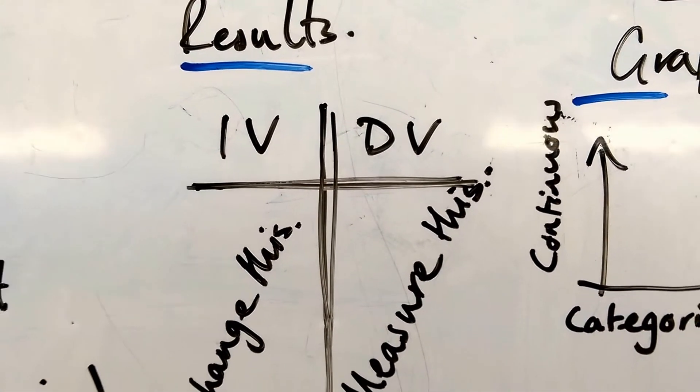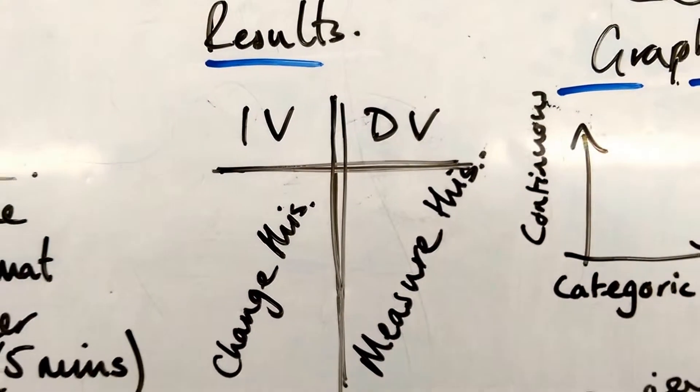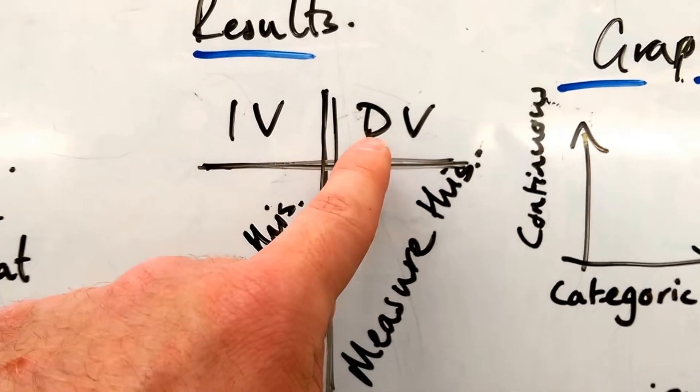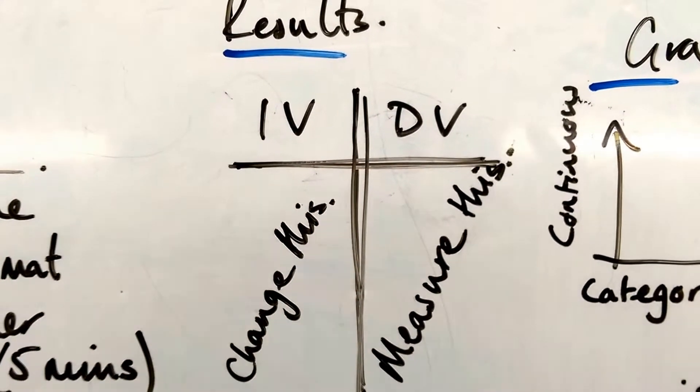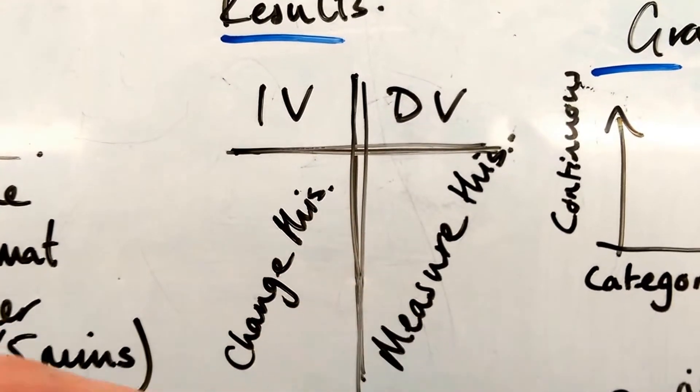Then, collect your results. We usually use a results table, with the independent variable on the left, the dependent variable on the right. You change this, you measure this. It's that simple.